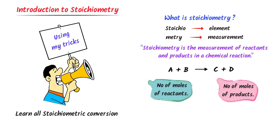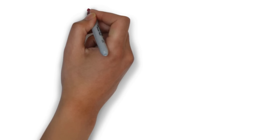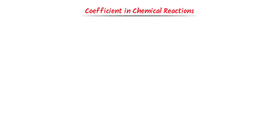Remember that stoichiometry is the calculation of products and reactants in a chemical reaction. Now let me teach you the important concept of coefficients in a chemical reaction, which a lot of students are not understanding. For example, consider this chemical reaction: hydrogen gas reacts with nitrogen gas to form ammonia NH₃. I will balance this chemical reaction.